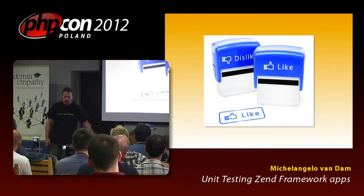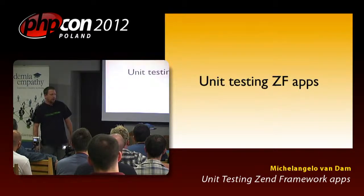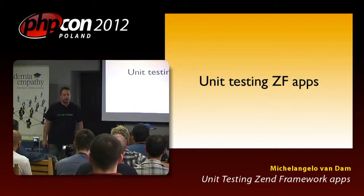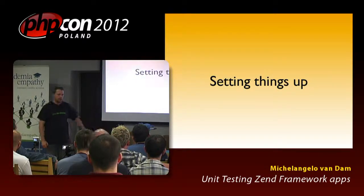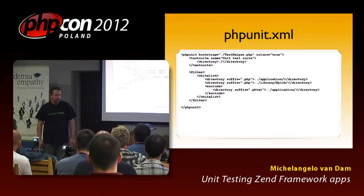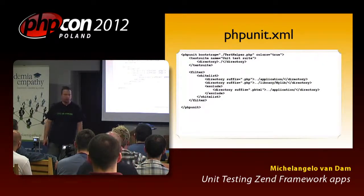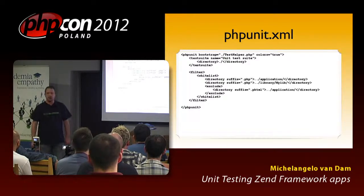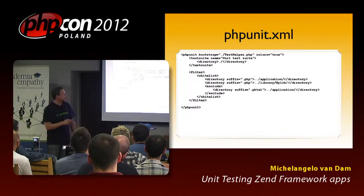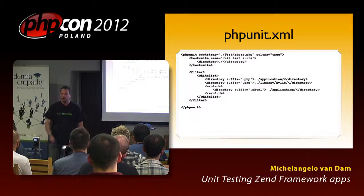So that is a little bit of the introduction. We're here for unit testing of Zend Framework applications — and like I said, most of it can be applied to any kind of other framework. It all starts with setting things up, and this is Zend Framework specific. I have a configuration file for PHP unit. I start in this directory and I've got some directories that I want to whitelist. By whitelisting, it will only focus on those directories — my application and my own library if it's for a specific project.